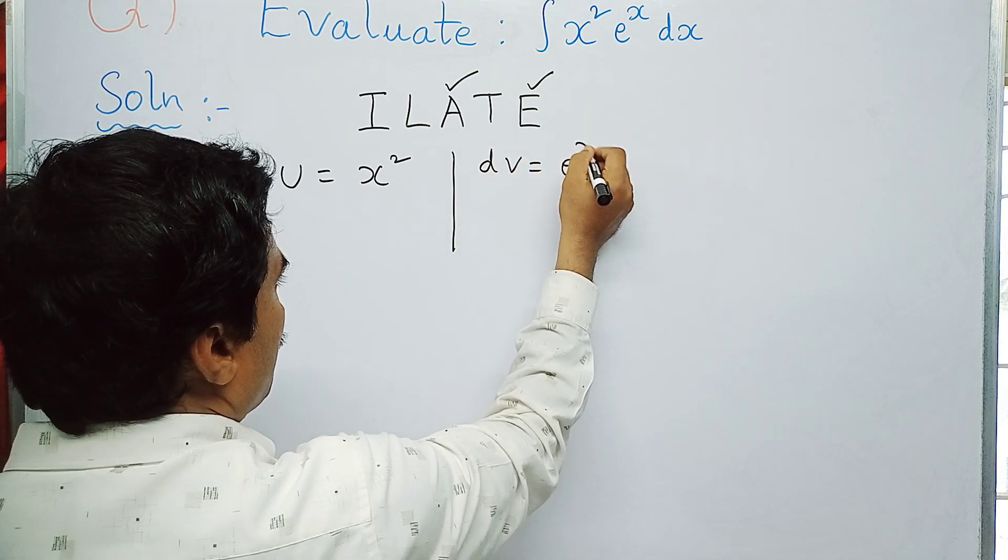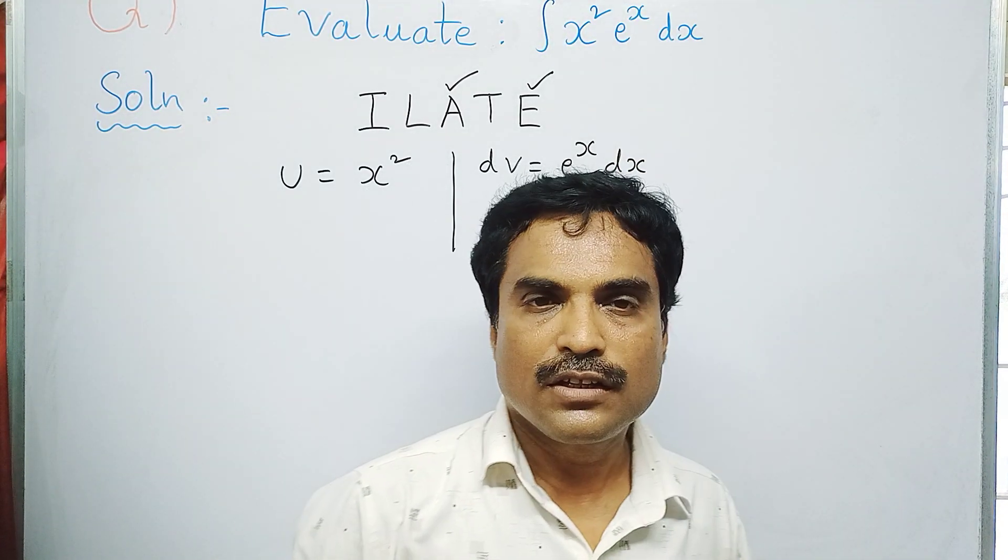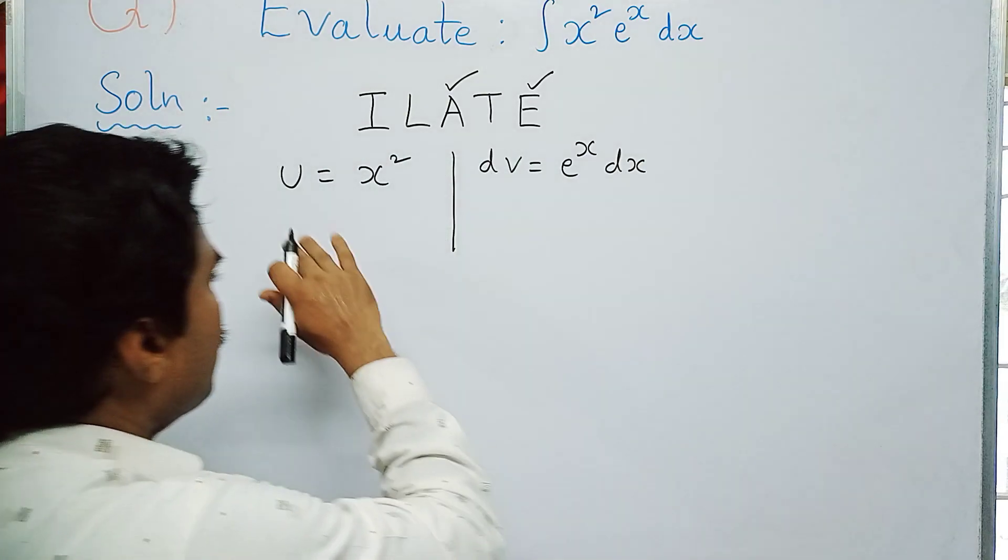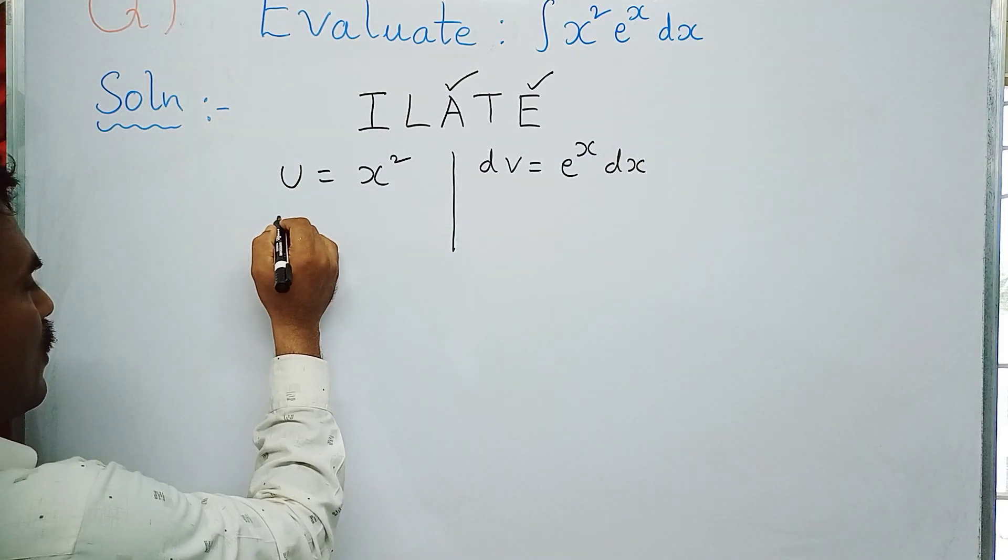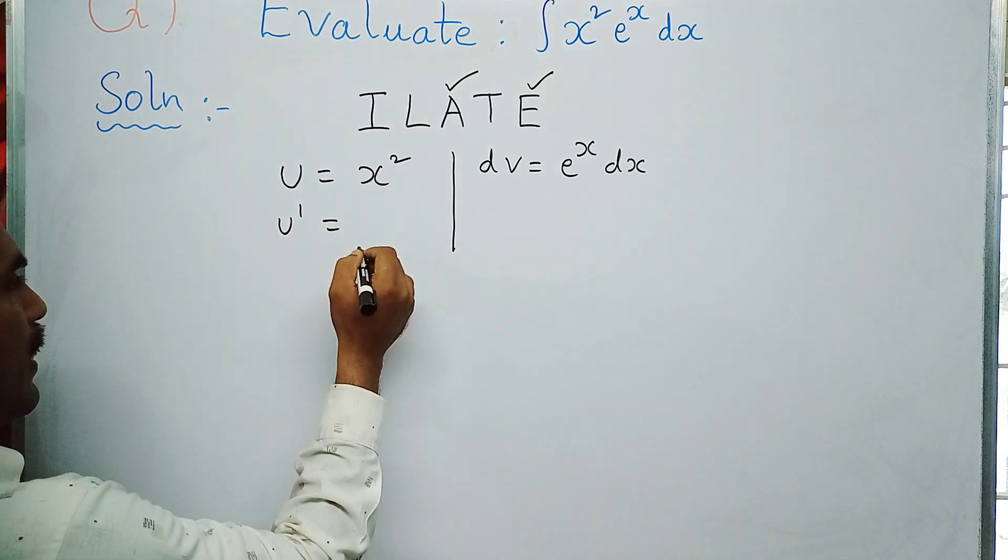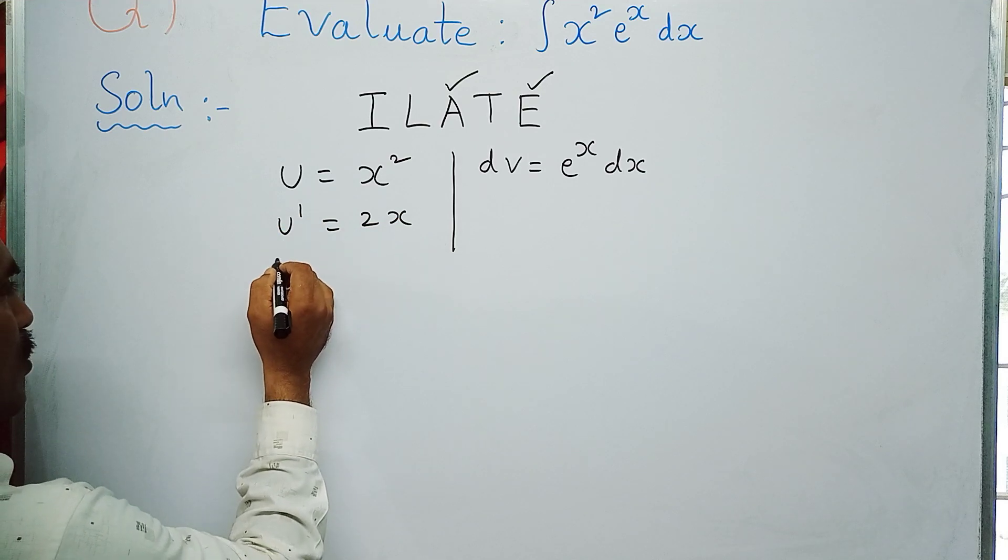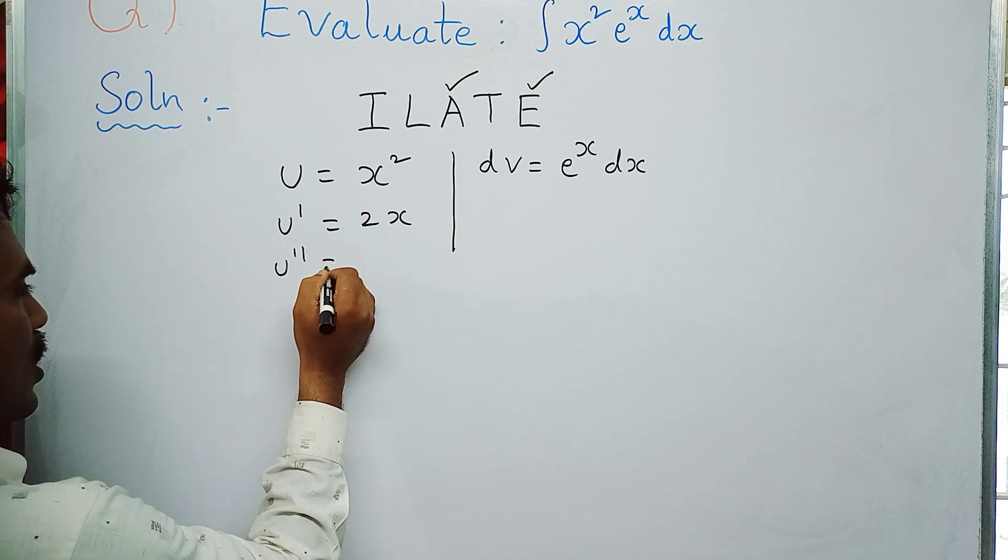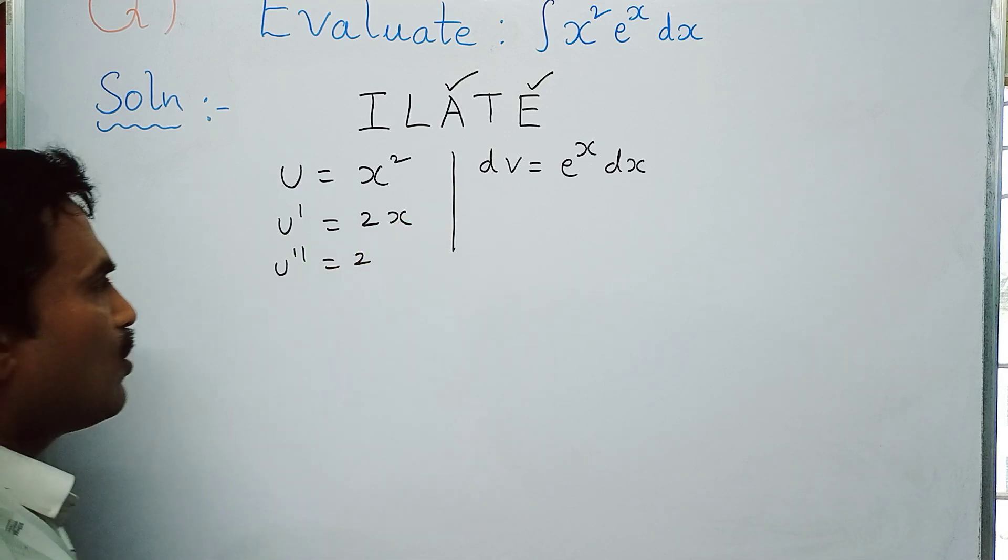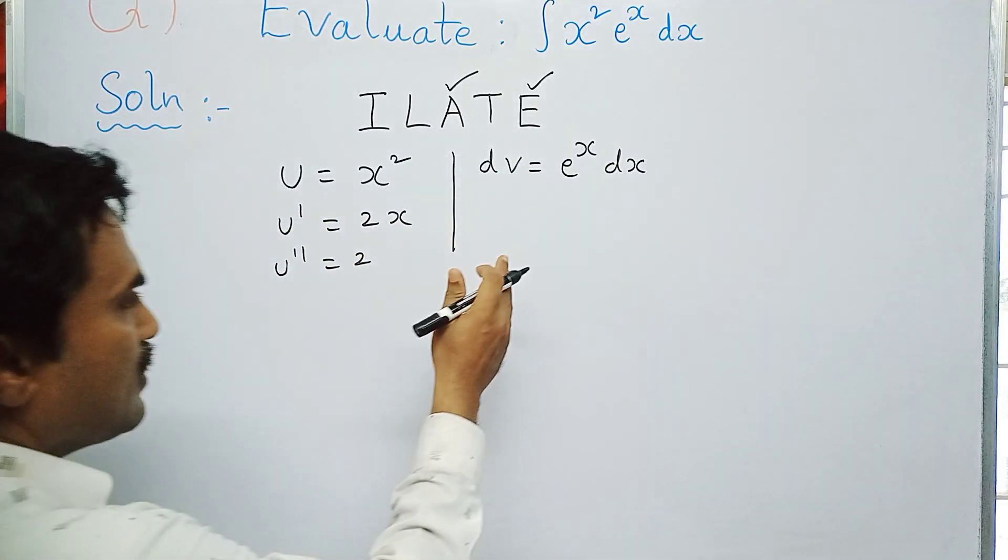Now on the left-hand side, we have to differentiate the given function u up to the constant. Differentiate on both sides: du/dx or u' = 2x. Again differentiate: u'' = 2, since d/dx of x is 1. So we have differentiated up to constant.